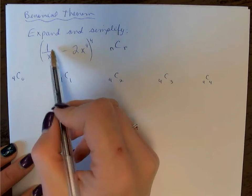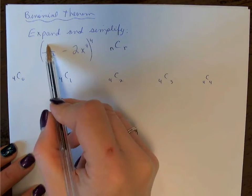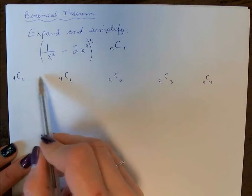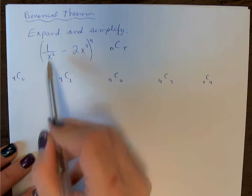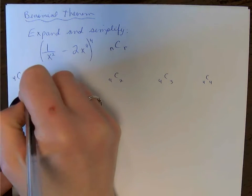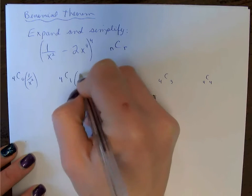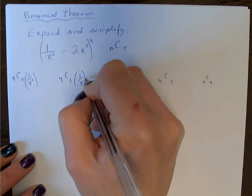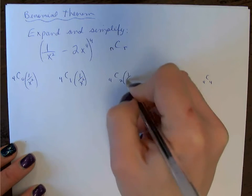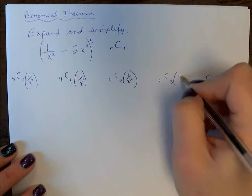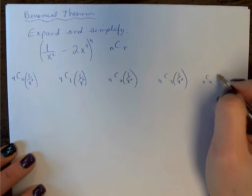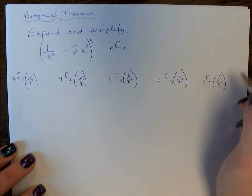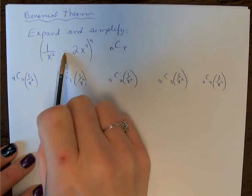The next thing I do is I write down the first term and the second term beside each one, and then we'll add our exponent in. So I write 1/x² beside each combination.